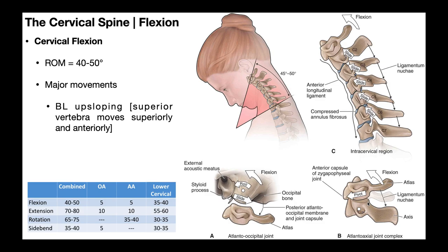At the atlanto-axial joint, we also have flexion. We see the atlas's posterior tubercle separating from the axis's spinous process. There's more of an anterior pivot here — we get an anterior pivot of the atlas on the axis. This has implications in different kinds of spinal cord disorders, which we'll discuss later. There's not really so much a roll or slide here as there is an anterior pivot of the atlas on the axis.